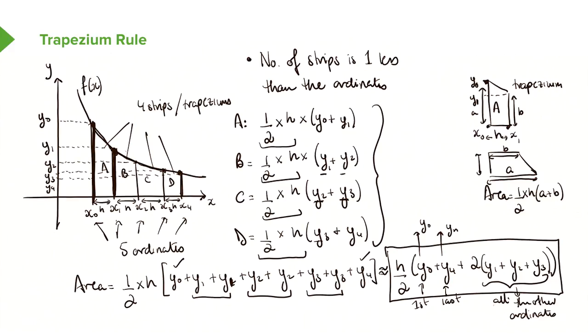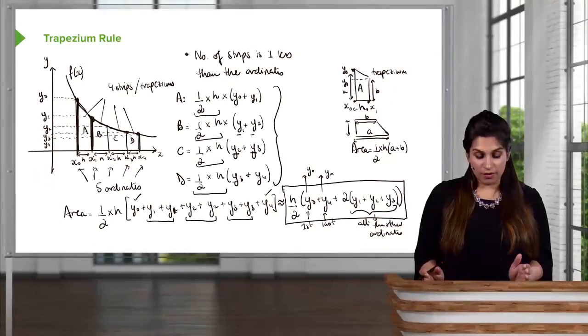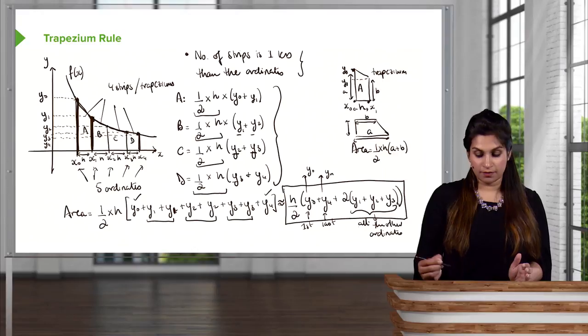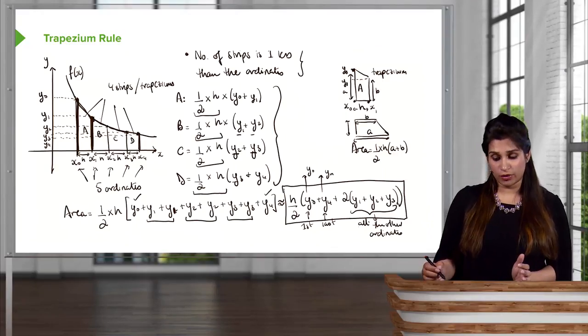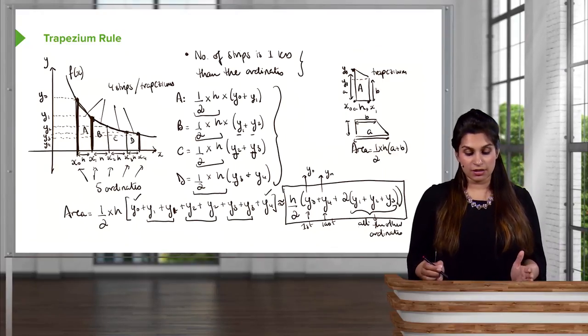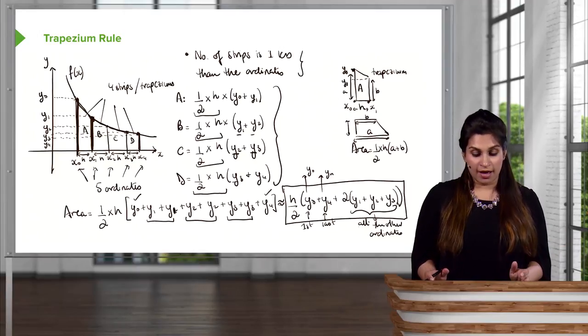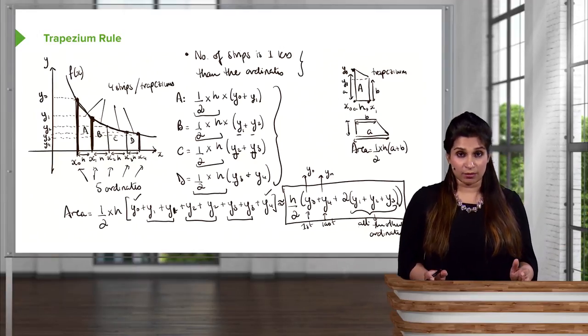So we'll move straight into an example, but before that, I just want to recap what everything is in the trapezium rule. Remember that you have the number of strips and the number of ordinates relationship, which is quite important. Depending on what the question says, if they give you strips or trapeziums—I'm just calling them strips here—it's always one less than the number of ordinates.